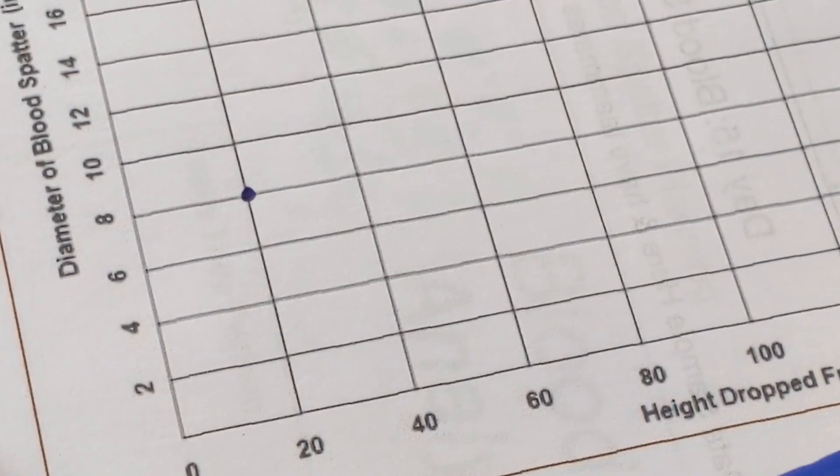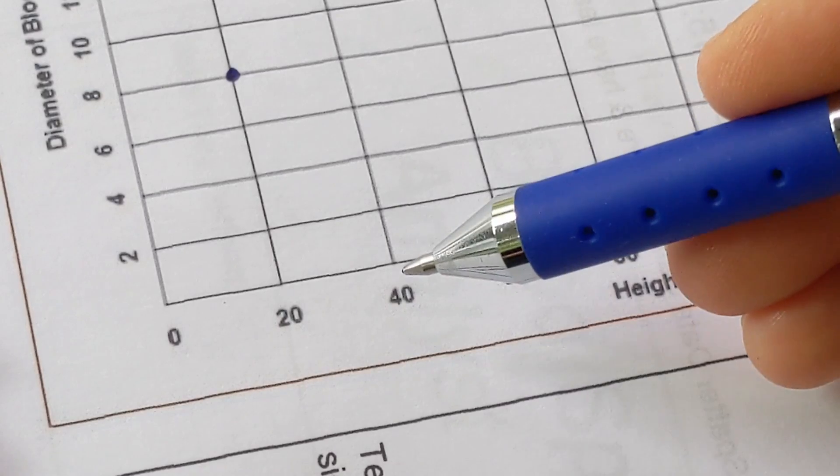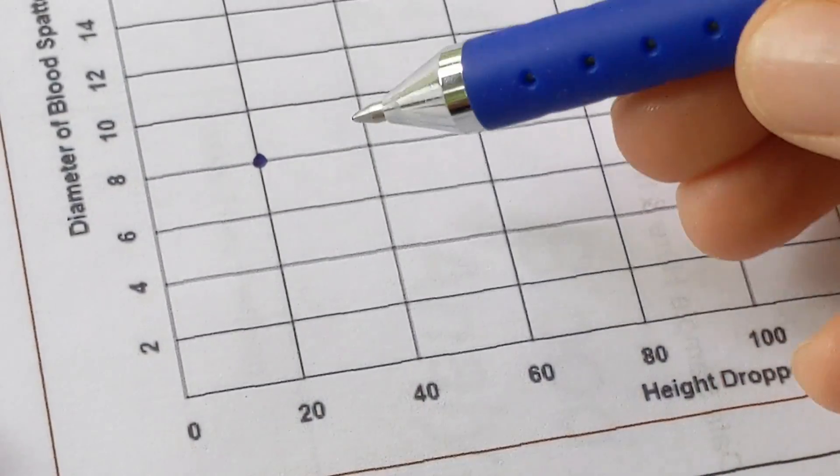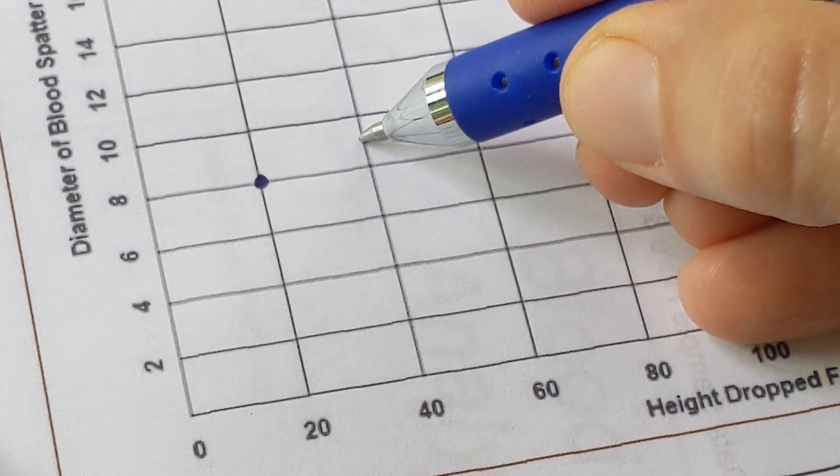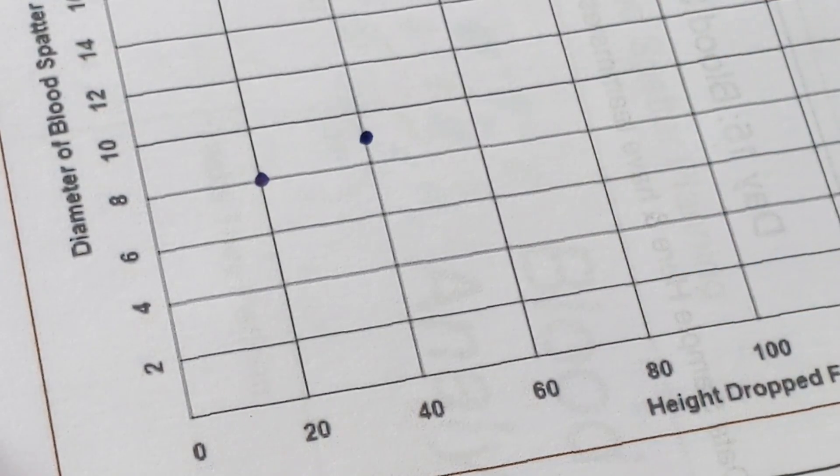I'll go back to my graph, and on the X axis I find the 40 centimeters, and on the Y axis the 9 is going to be between the 8 and the 10, so I will go ahead and plot my dot right there. I'm now going to measure and plot some additional data.